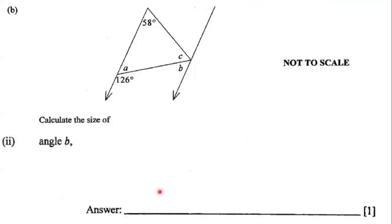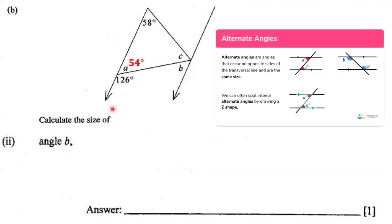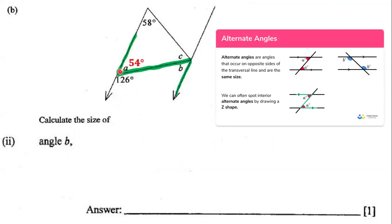Let's move on to the next question. Our goal is to calculate the size of angle B. Notice that angle A is 54 degrees, and also notice that we can identify a Z shape. We can often spot interior alternate angles by drawing a Z shape, and this Z shape is useful because it can help us identify alternate angles.